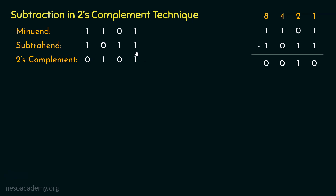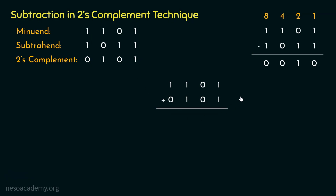So the two's complement negative inverse of subtrahend 1011 is 0101. Now let's perform the subtraction — again, we will perform addition. We take minuend 1101 and add it with the two's complement negative inverse 0101.